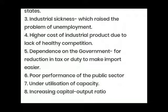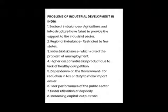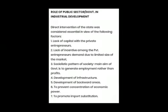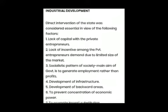Number 7: Underutilization of capacity — public sector undertakings were not being optimally used up to their installed capacity. The capital-output ratio was also very high, meaning the amount of capital invested to produce each unit of output was quite high, making the cost of production and the price of industrial goods expensive.